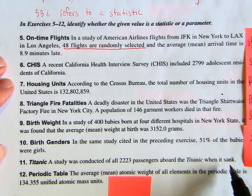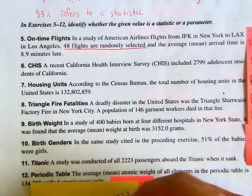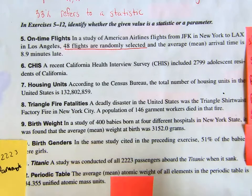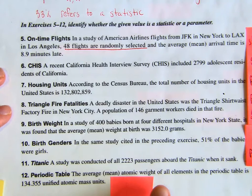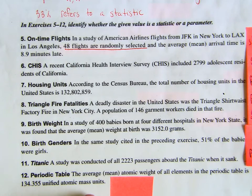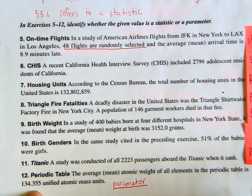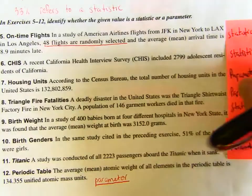Number 11: a study was conducted of all 2,223 passengers aboard the Titanic when it sank. This 2,223 will be a parameter because it's talking about all the people who tragically sank on the Titanic. Number 12: the mean atomic weight of all elements in the periodic table is 134.355 unified atomic mass units. This will be a parameter because it's talking about all elements in the periodic table.